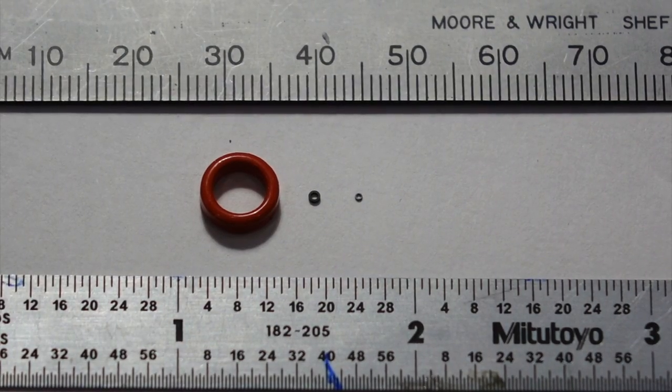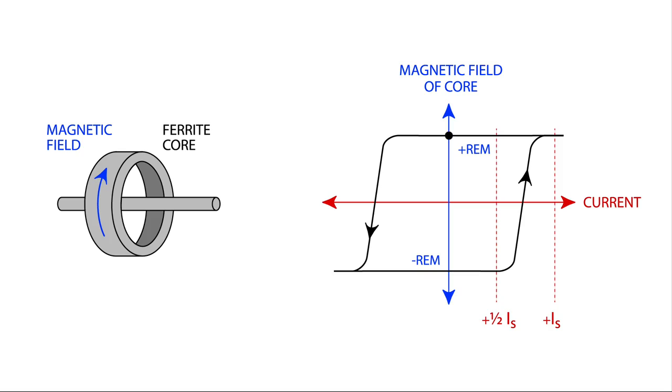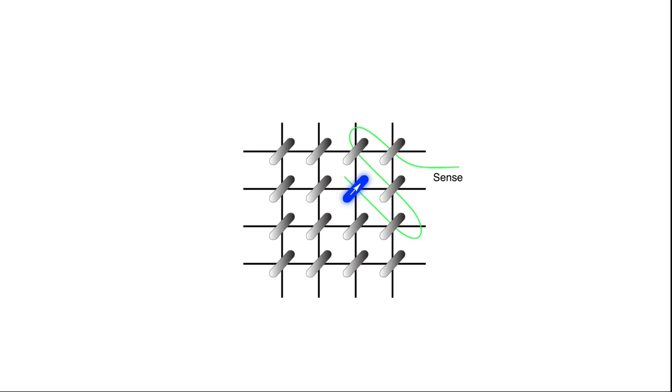In core memory, the bits are held by the magnetization state of tiny ferrite cores. These can be magnetized in two orientations, clockwise or counterclockwise. You magnetize them by running currents through wires that go through them. Addressing wires are in a regular XY matrix. The combined current through the wires has to be higher than a threshold value for a core to flip its magnetization, a property that's used to address a single core in the matrix. There is also a global sense wire used for reading, and a global inhibit wire for writing.